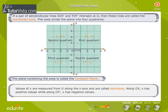Values of x are measured from O along the x-axis and are called abscissae. Along OX, x has positive values, while along OX', x has negative values.